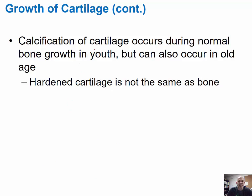Cartilage can become calcified. The calcification of cartilage occurs during normal bone growth in youth, but it can also occur in old age. Our skeleton starts off as cartilage, and then much of that skeleton is converted into bone by calcification processes. However, hardened cartilage is not the same as bone.